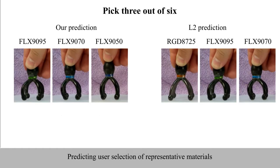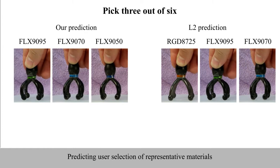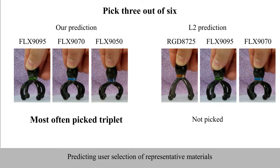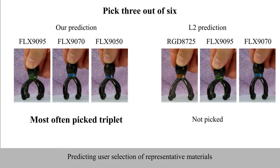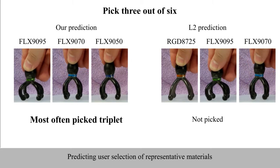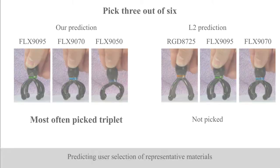In the second trial, the participants were asked to pick three out of six possible octopi. Again, our prediction was the most often picked triple, while the LQ prediction was never selected.